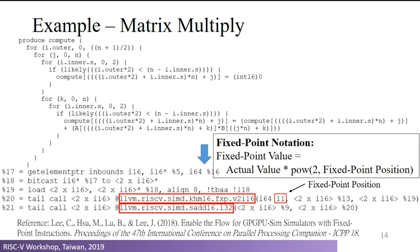This is another example using matrix multiply. The first picture is the Halide IR expression, then TVM generates the LLVM IR. Note that since we are using fixed-point type, we cannot treat multiplication like a normal integer operation. The fixed-point value equals the actual value multiplied by 2 to the power of the fixed-point position, so we also need to provide the LLVM backend with the fixed-point position information to generate correct code. The third picture shows the assembly code generated by the LLVM backend.